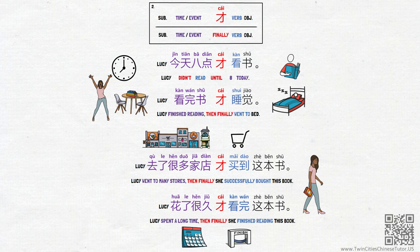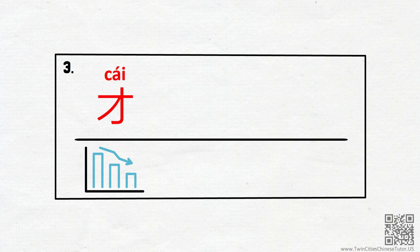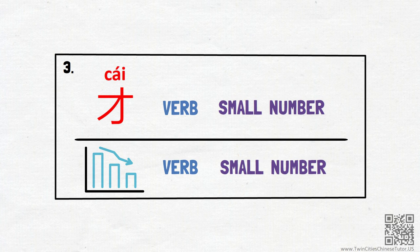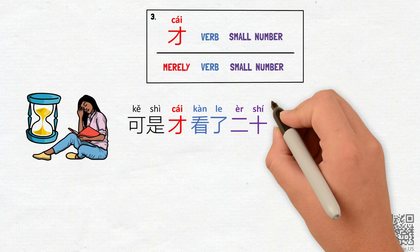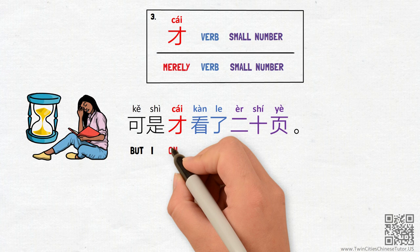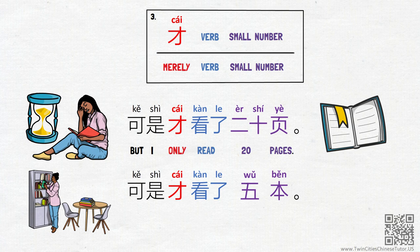Next, the third usage of 才 as an adverb extends even further from the overturning of the previous expectation idea. This is when it's used to convey the feeling of less than expected or worse than expected. In this scenario, some numbers are usually mentioned after 才, so we can translate 才 into English as 'merely' or 'only.' If Lucy says, 'Today I read all day, 可是才看了二十页,' she is saying, 'Today I read all day, but I only read twenty pages.' If Lucy says, 'I bought twenty books this month, 可是才看了五本,' she is saying, 'I bought twenty books this month, but I only read five of them.'